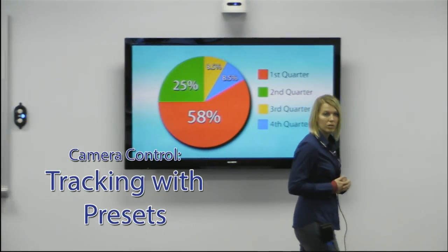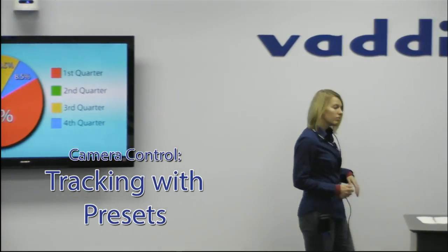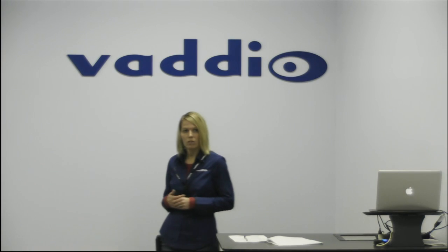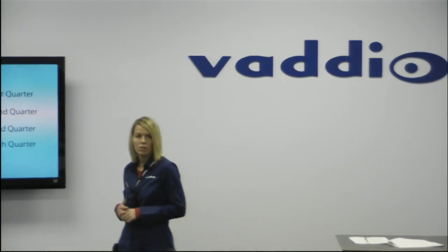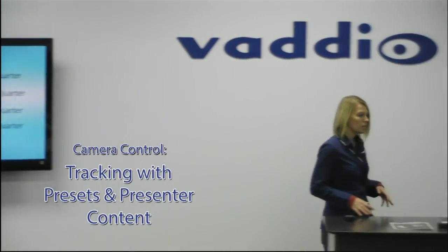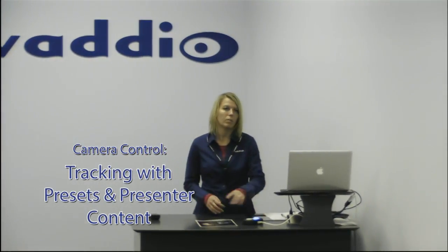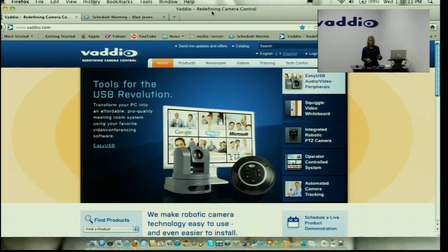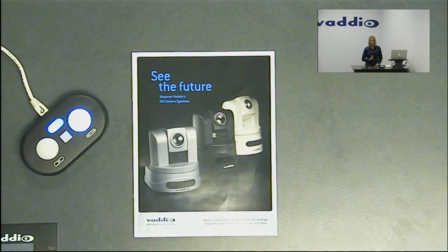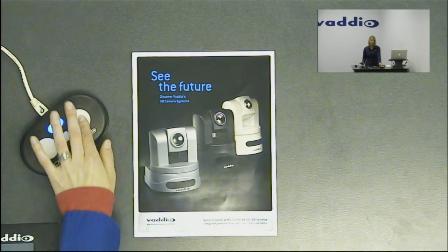Once you have camera tracking, you can add in presets to allow for a wider variety of fixed positions at different workstations. When leaving the preset, the camera automatically goes back into tracking mode where you are once again being followed. You can have camera tracking, presets, and multiple content sources for a fully automated presentation area without ever having to worry about walking out of the shot or how to present your training materials. This shows you how far we have come since the wide shot — presenting has never been easier or more interactive to an audience.